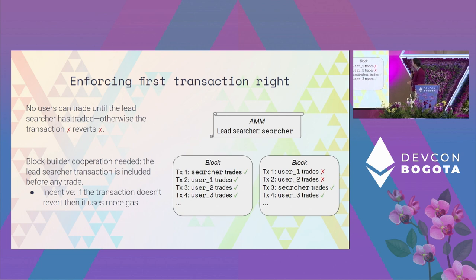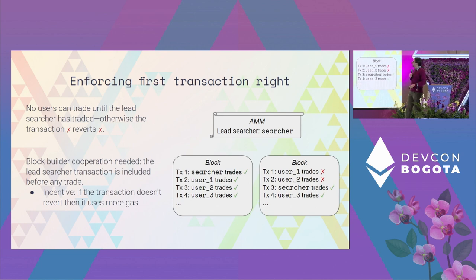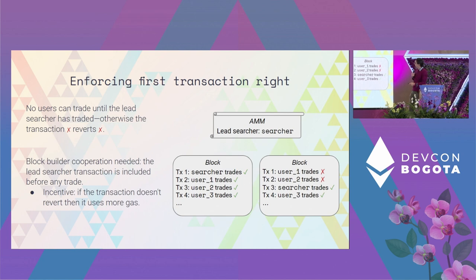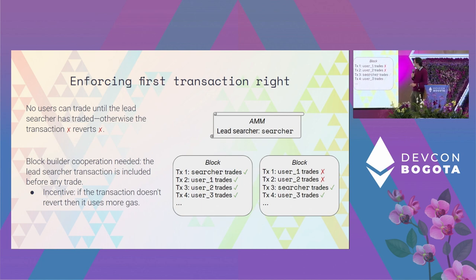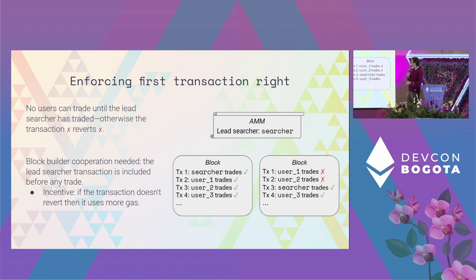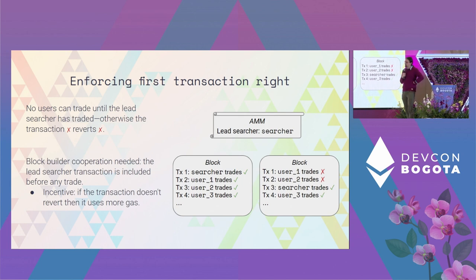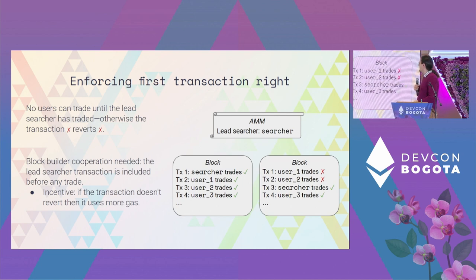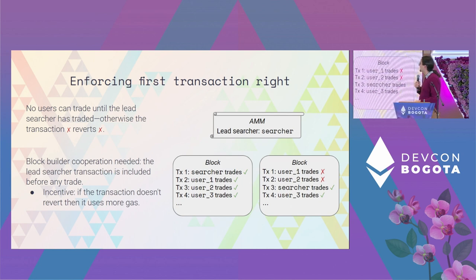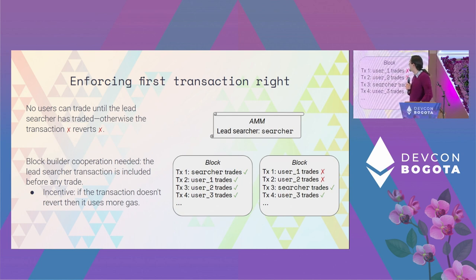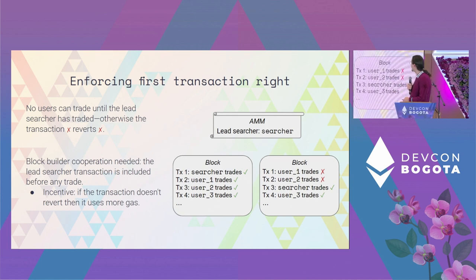Otherwise, if the block is reorganized differently, then the trade reverts. Naturally, this requires cooperation with the block builder, so the idea is that the block builder is aware of the concept of the AMM and orders everything accordingly. However, there is an incentive needed, and the incentive would be the gas used by the transaction. If the transaction reverts immediately, it's going to use less gas, and in particular this would help the block builder have an advantage on the MEV auction.